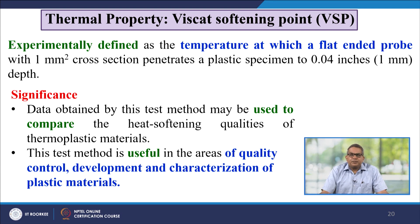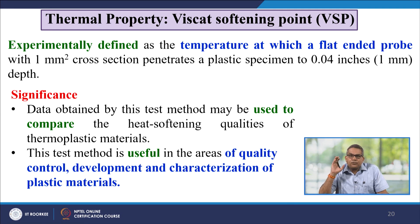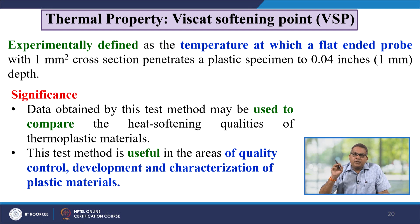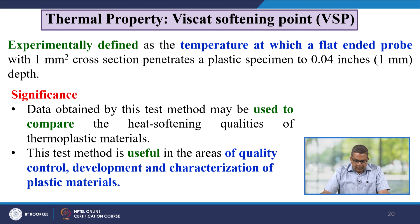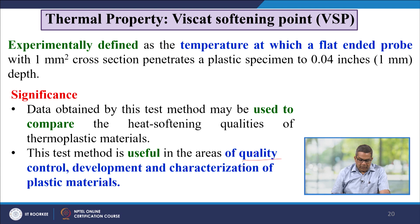Now let us talk about the Vicat Softening Point (VSP). It is experimentally defined as the temperature at which a flat-ended probe with 1 mm² cross section penetrates a plastic specimen 0.04 inches. Data obtained by this test method can be used to compare the heat softening qualities of thermoplastic materials. This test method is very useful in quality control, development, and characterization of various plastic materials.